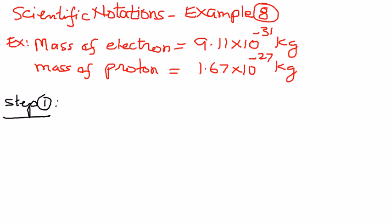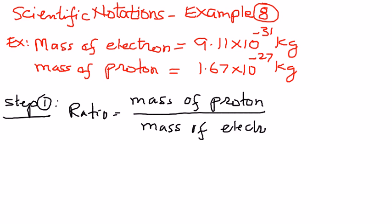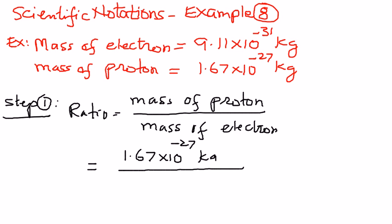Now we can write this as a ratio to find out the number of times the mass of proton is larger than the mass of electron. We will write that as mass of proton divided by mass of electron. Mass of proton is given as 1.67 times 10 to the power of negative 27 kilograms, and mass of electron is given as 9.11 times 10 to the power of negative 31 kilograms.